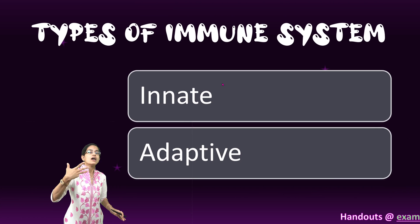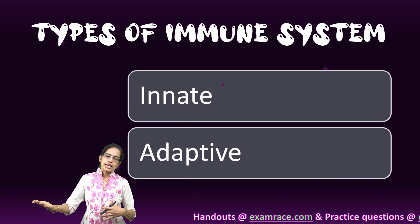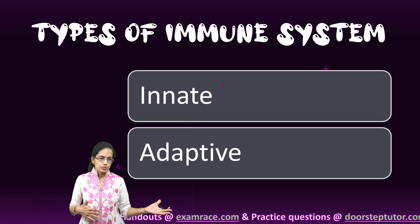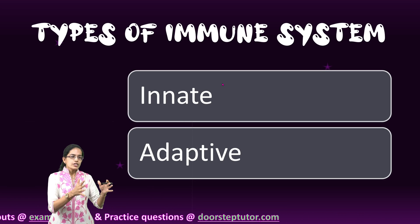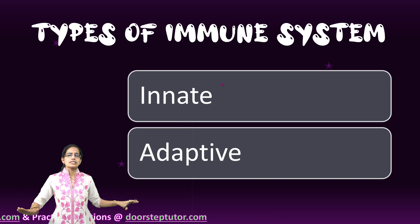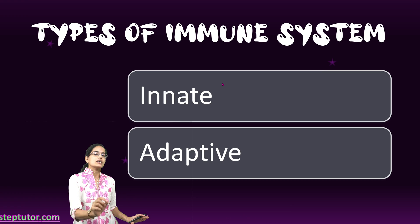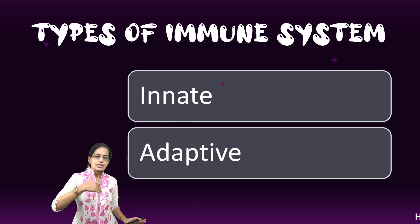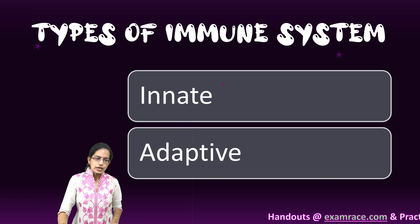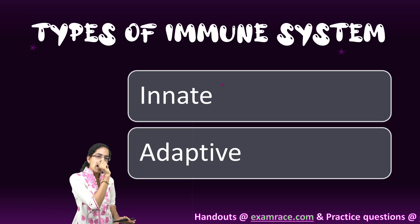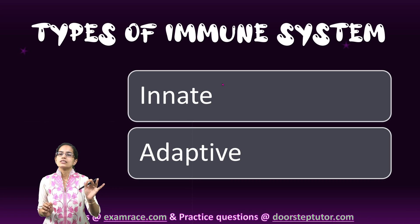Immunity can be of two types: innate immunity or adaptive immunity. Innate immunity is the one you are born with — it ensures that general health threats are well addressed. Acquired immunity is developed either through vaccination or exposure to a disease, and it generates more specific antibodies against pathogens.